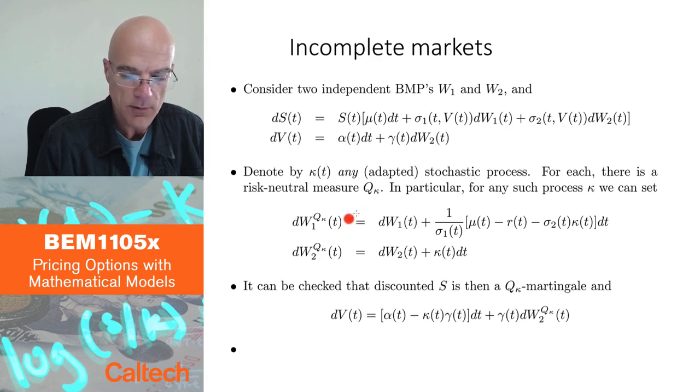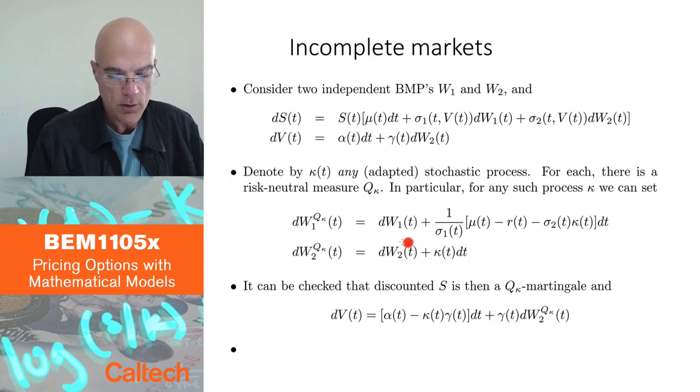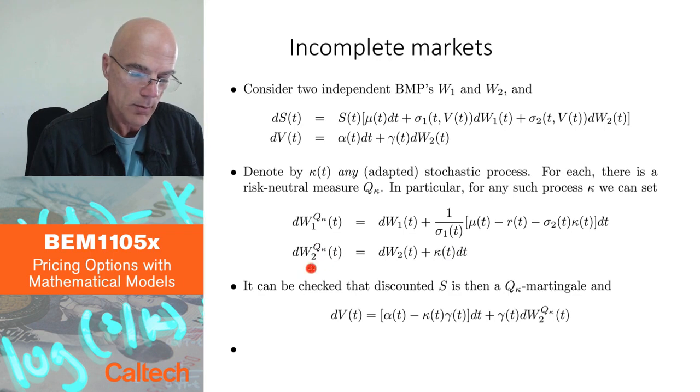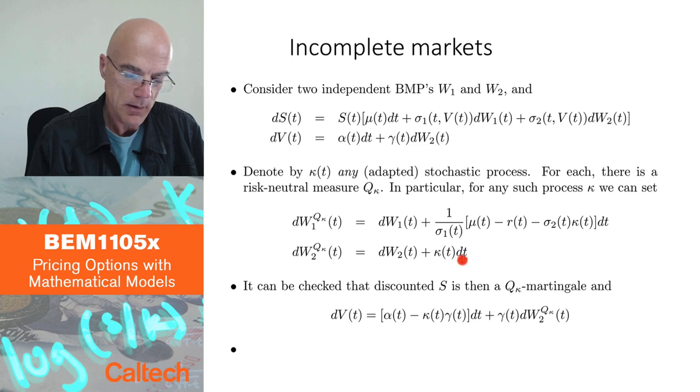What do you do? I'm just first going to look at the second equation here. You change W2 by adding kappa dt. What does this mean?